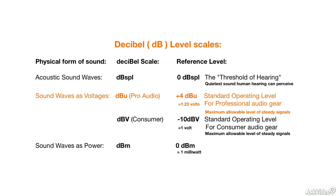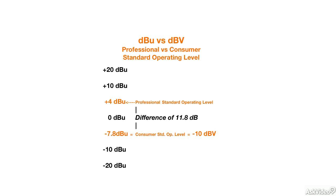When you see the specs of a piece of audio gear and it says it operates at plus 4 dBU, that means it's designed to pass audio at the standard professional level and should interface well with any other piece of pro audio gear. But consumer audio gear is designed to operate at a slightly lower average level, with a different reference level of only 1 volt, using a slightly different dB scale—the dBV scale, written with a capital V. The consumer standard operating level is minus 10 dBV, and because of the different reference voltage, it's not 14 dB lower but 11.8 dB lower than pro audio gear.